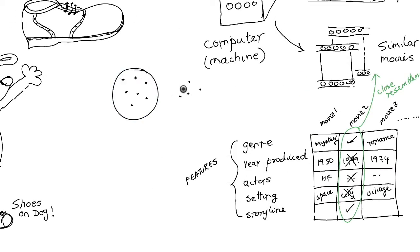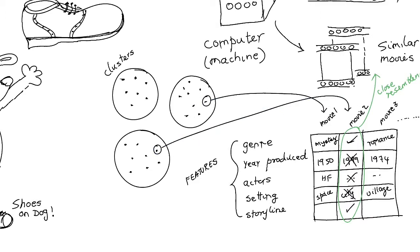The computer does this by creating an internal model that contains many clusters, and each point in the cluster represents a movie. The closer two points are in the cluster, the closer is the similarity between these movies.